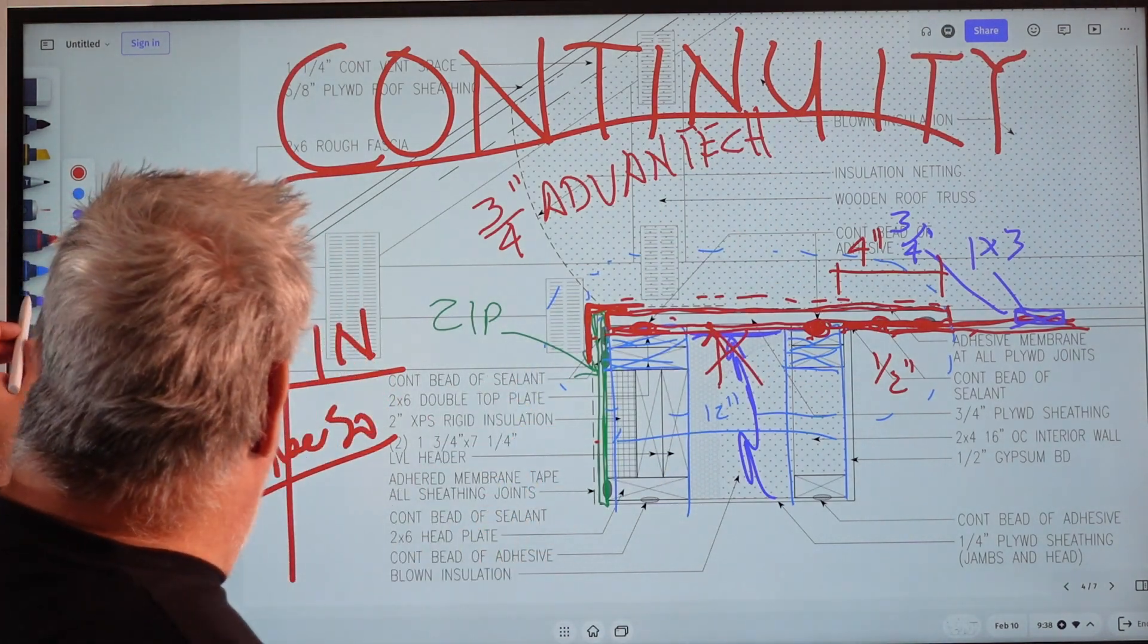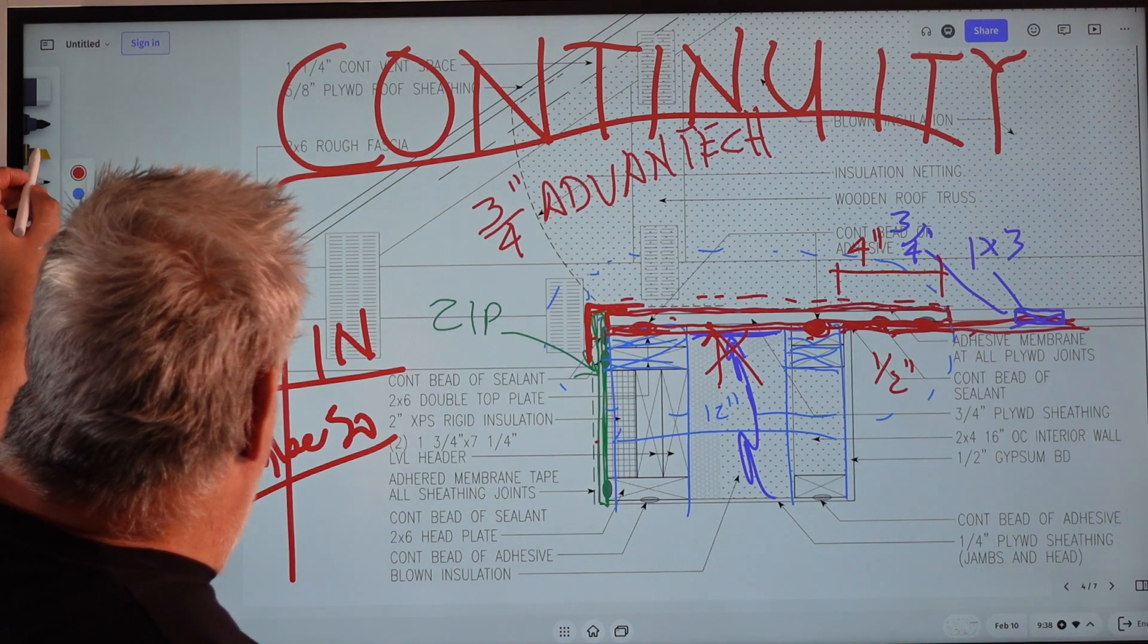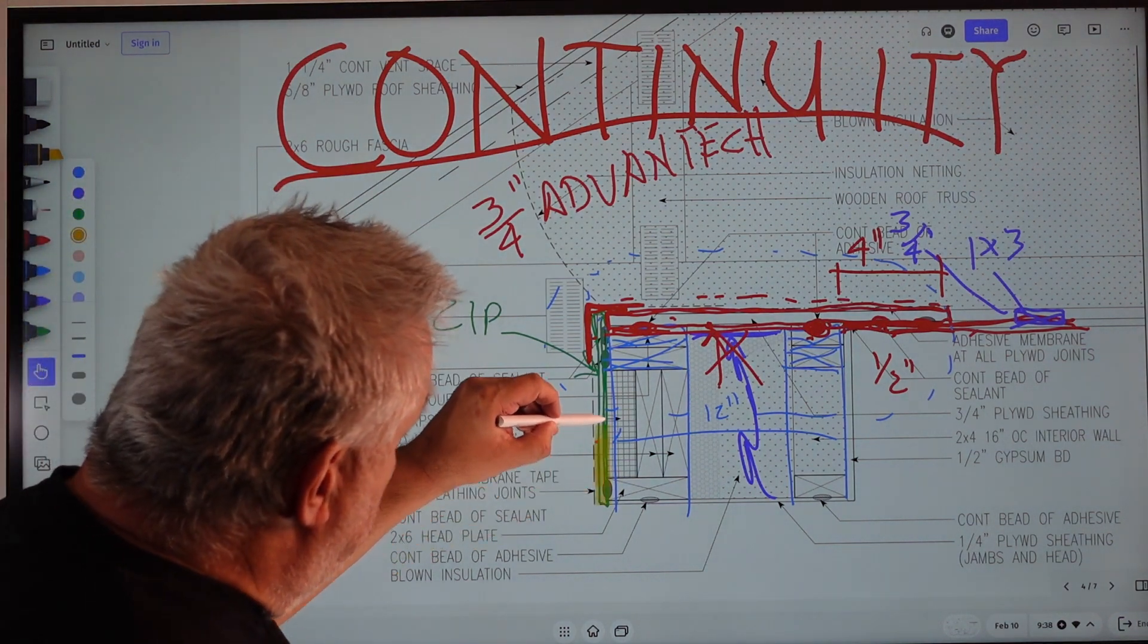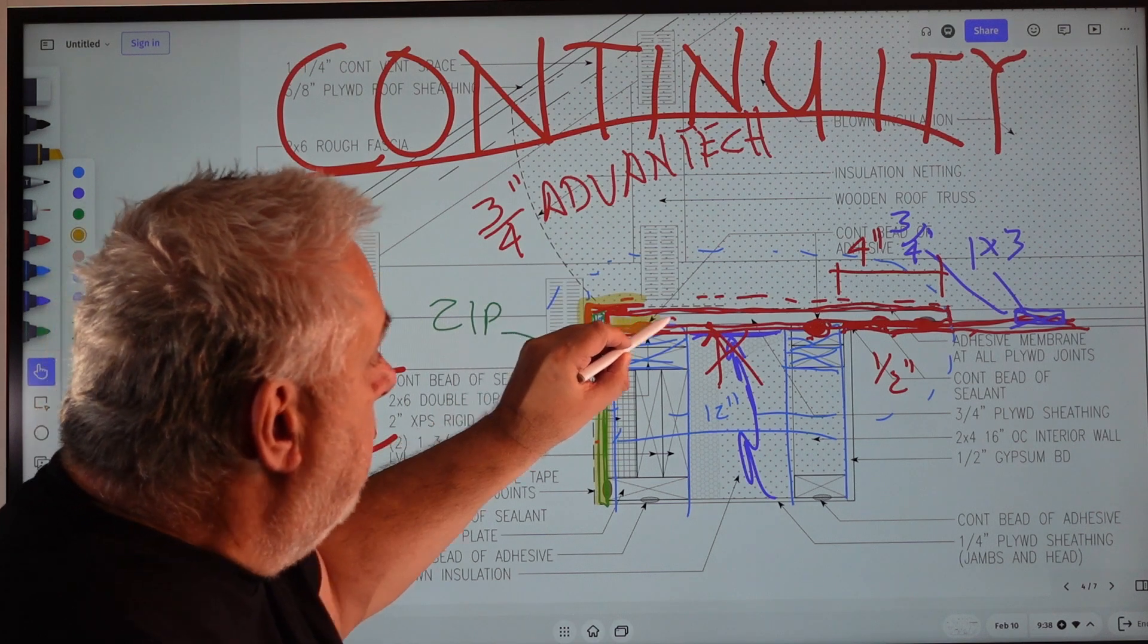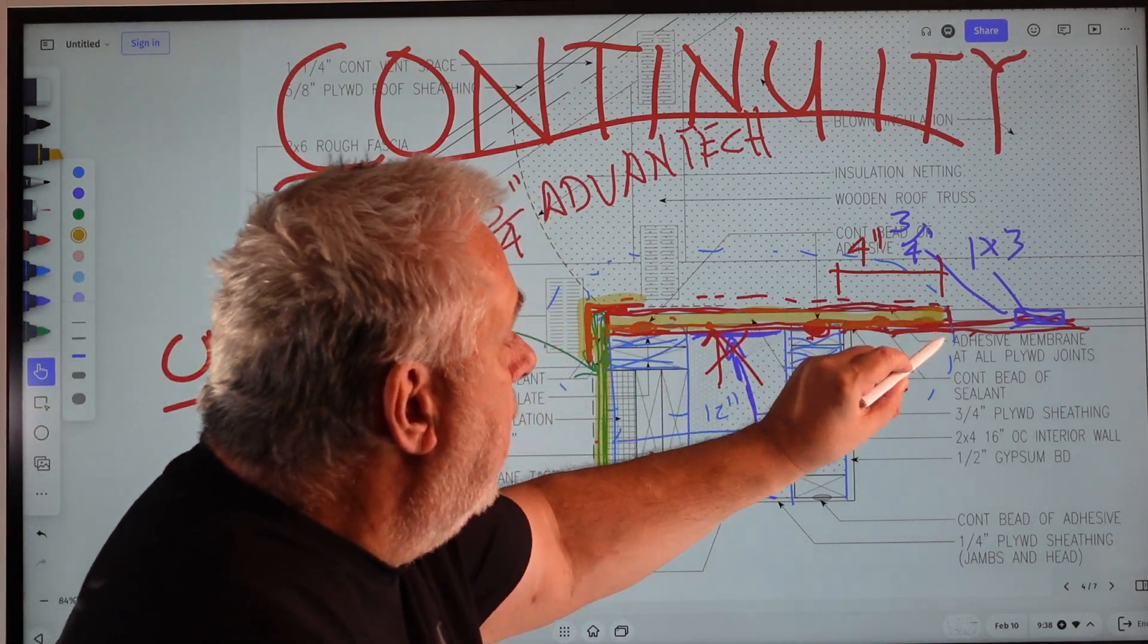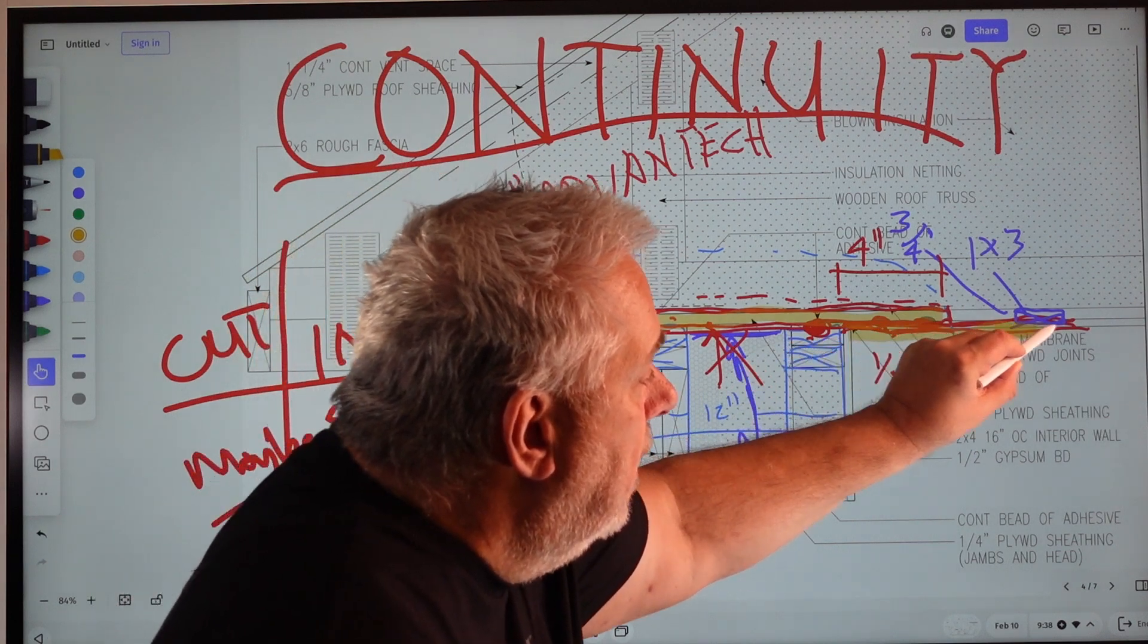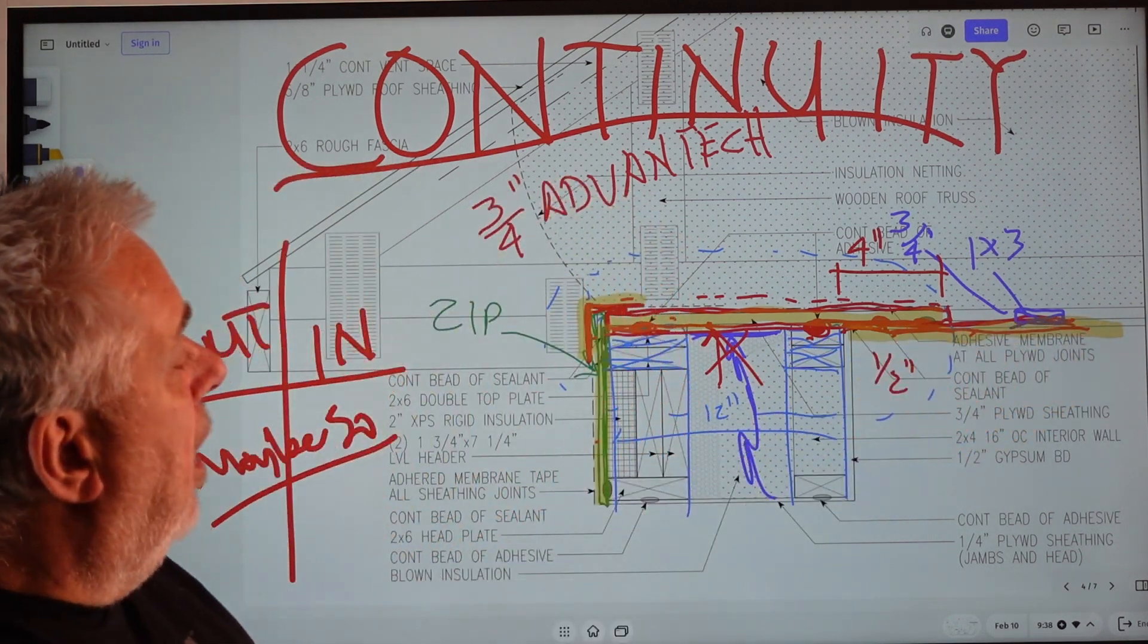We get continuity here. We get continuity in the fact that I come up my zip, I come across here with tape, I come across here, and I extend that flange, and then I extend my drywall. Look at it.